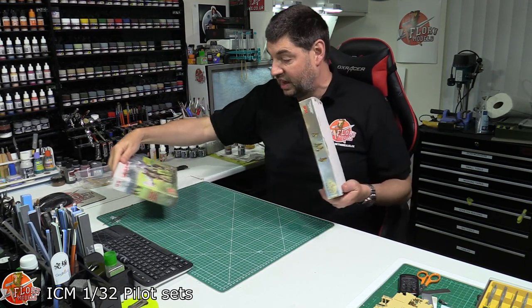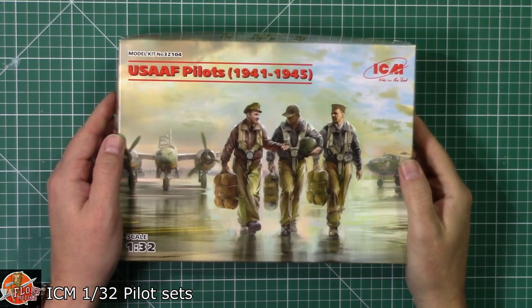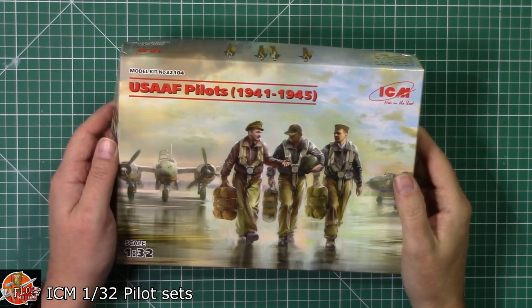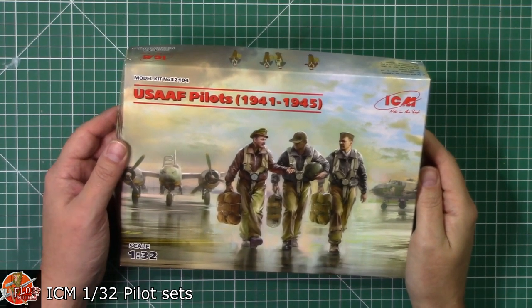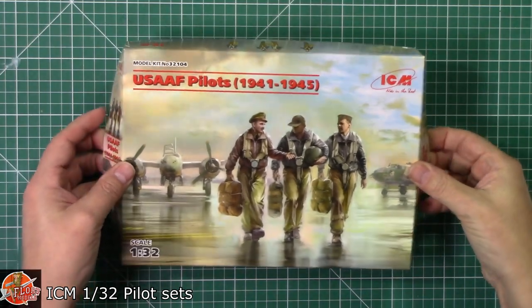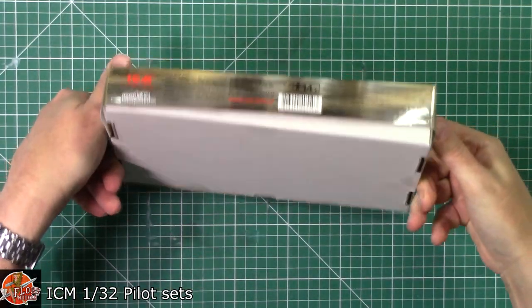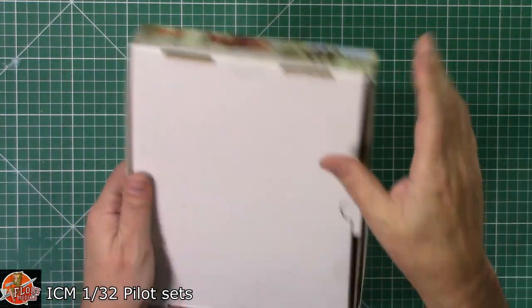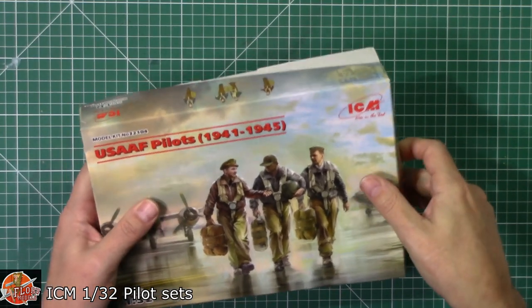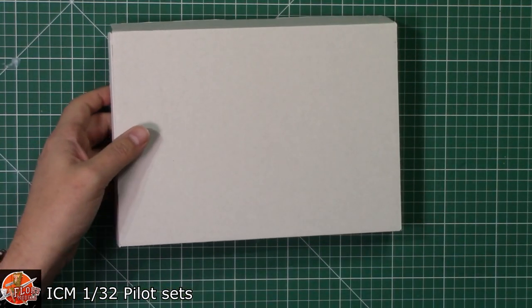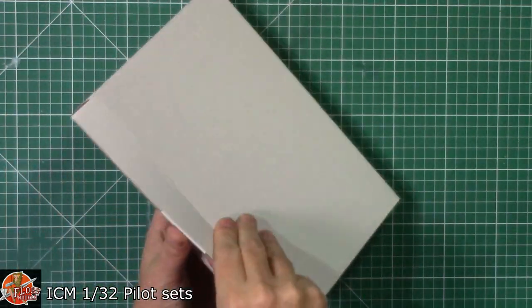I thought we'd have a look at these together because there isn't a great deal with it. If we start with the US Air Force one, as you can see, very nice sort of box art. Looks like we've got some invaders or B-25s even behind. Let me open this. Yes, we are unsealed. Usual thing with ICM, it's a box within a box.